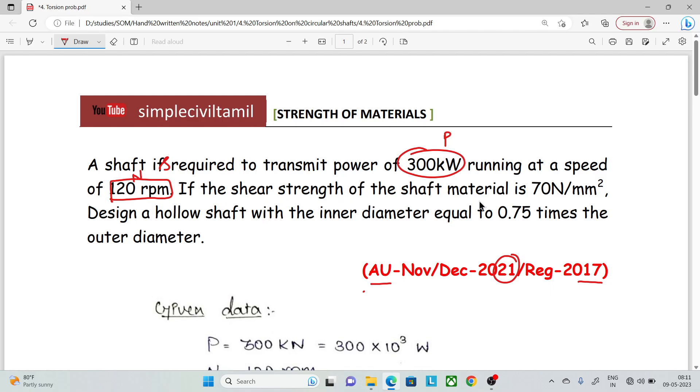If the shear strength of the shaft material is 70 Newton per mm square (τ = 70 N/mm²), design a hollow shaft with internal diameter equal to 0.75 times the outer diameter.